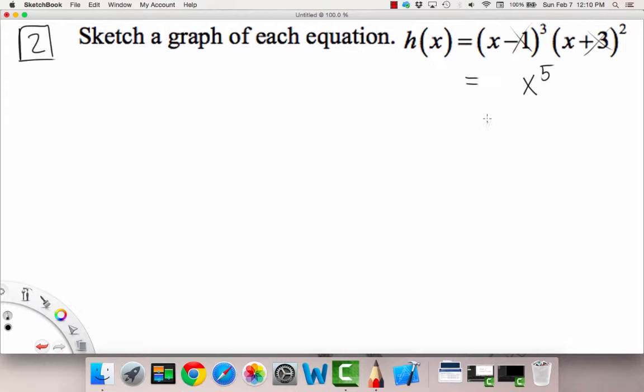This is a positive number in front, like a positive one. And then we have an odd power. So this is going to overall look like this on the left side and this on the right side as x goes to infinity and negative infinity, respectively.